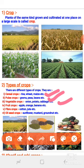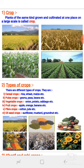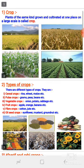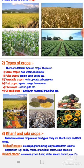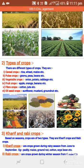The third type of crop is vegetable crops, like onion, potato, cabbage, and many other categories of vegetables. The fourth type is fruit crops, like apple, orange, banana, etc. The fifth type is fiber crops, like cotton and jute. The last type is oil seed crops, like sunflower, mustard, and groundnut — these are the crops which give oil.